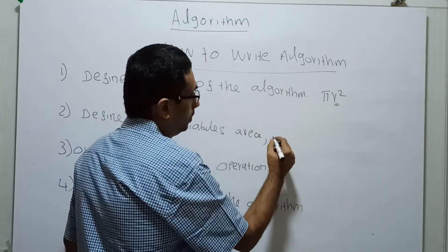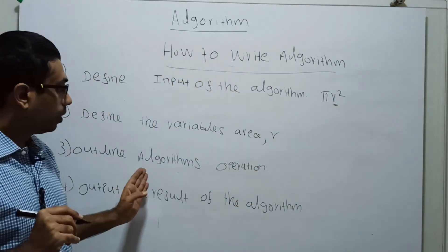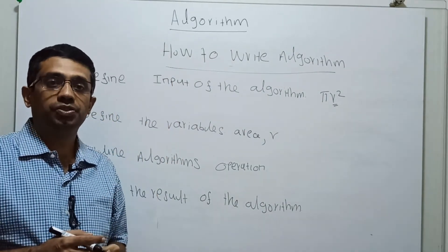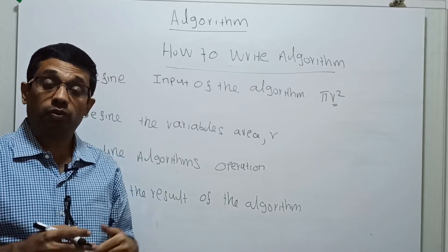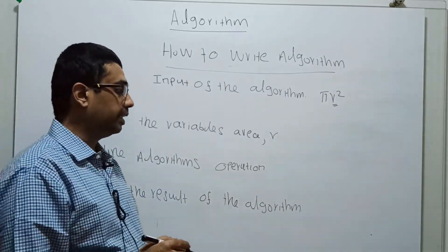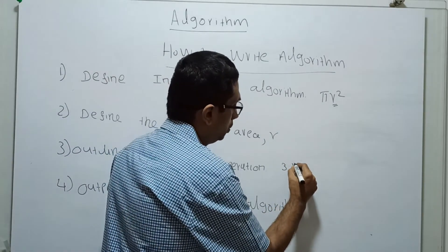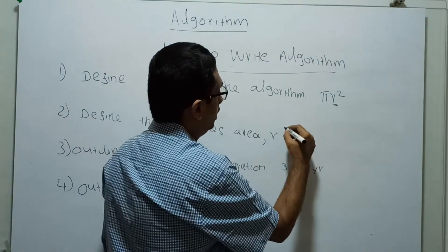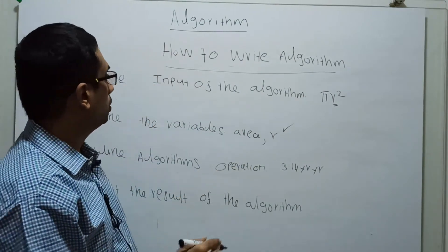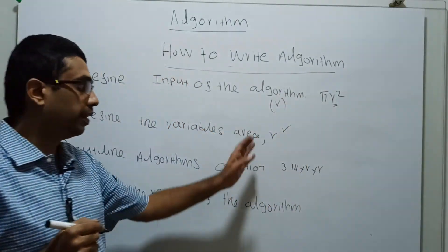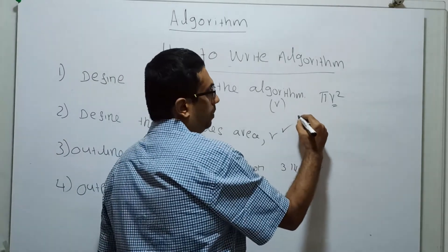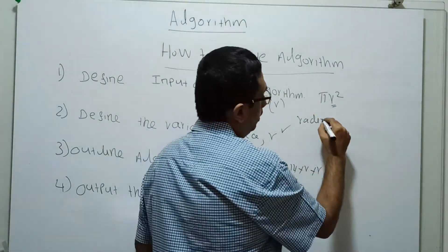Step three is to outline the algorithm's operations. Consider whether the operations are based on sequence, branching, or looping — that depends on your program logic. For the circle area, I have to calculate 3.14 into radius into radius. We should give a meaningful variable name like 'radius' rather than just 'r'.